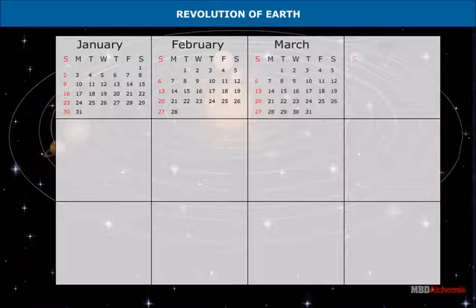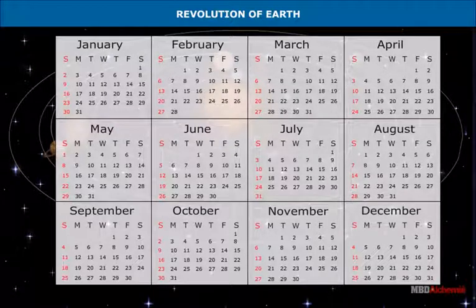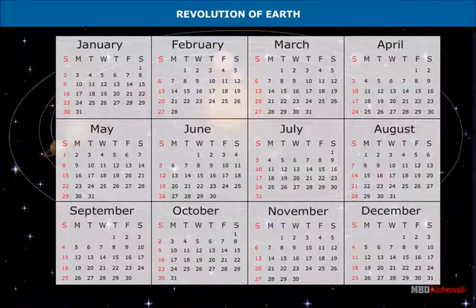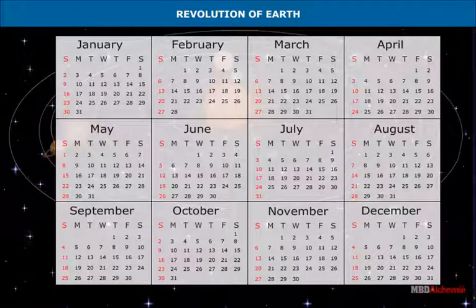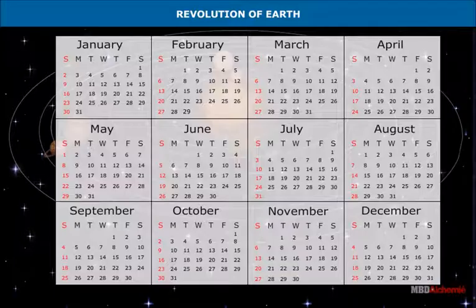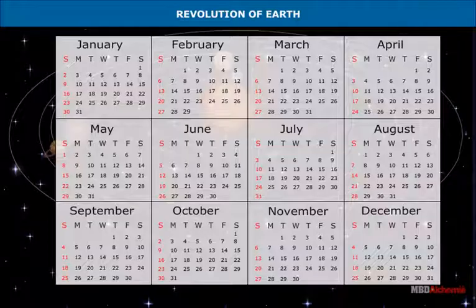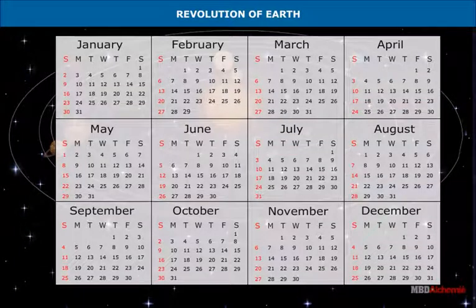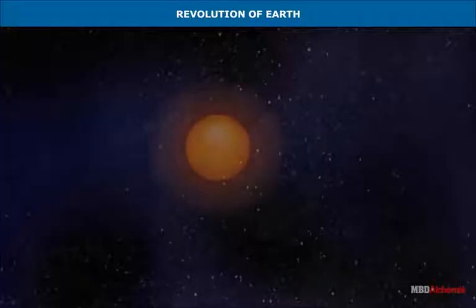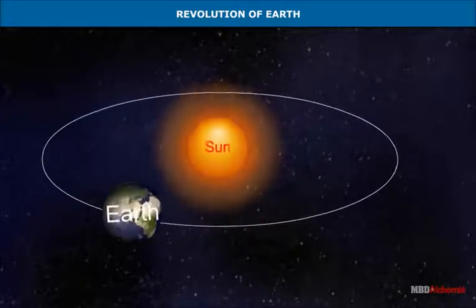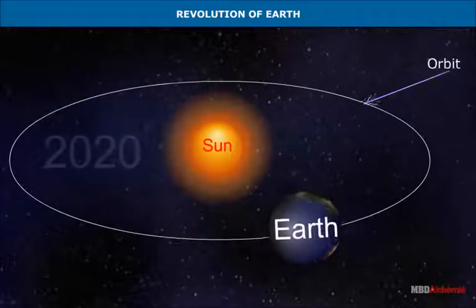While 365 days, each of 24 hours duration, make one year, six hours are adjusted into one complete day every four years. This extra day is added to the month of February, giving it 29 days instead of the usual 28 days. Hence, every four years the month of February has 29 days. This year is known as the leap year.